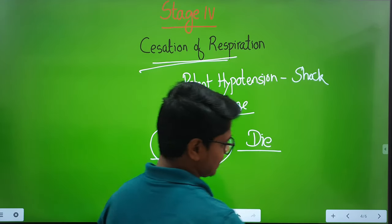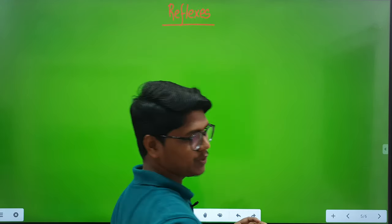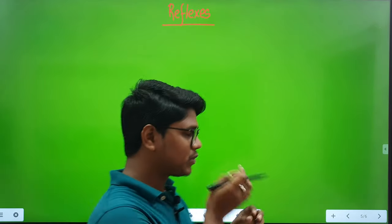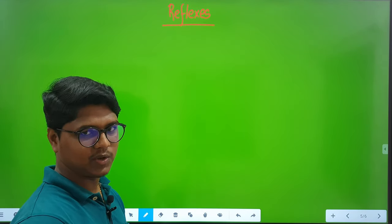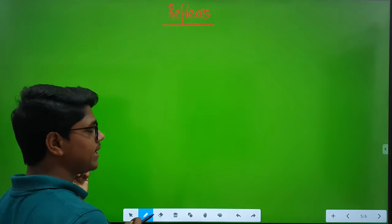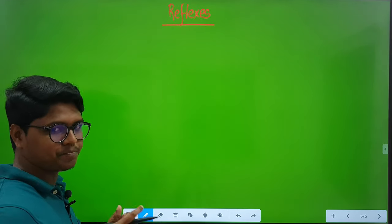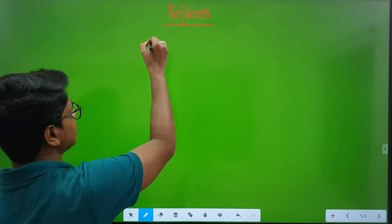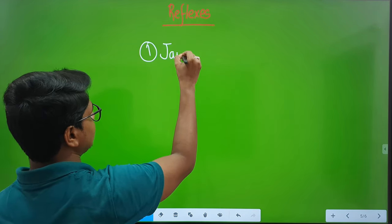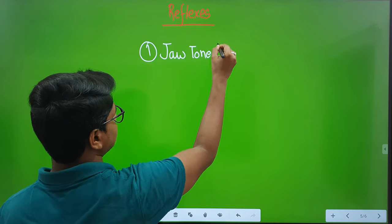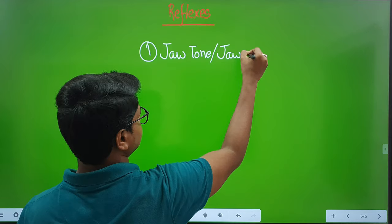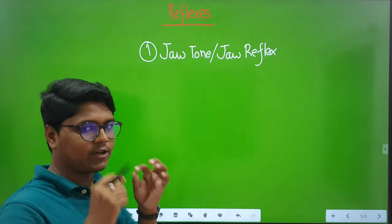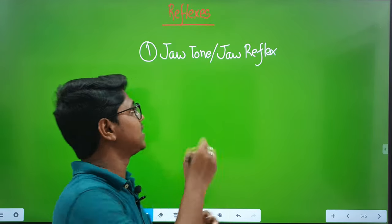This is all about the stages. I hope you understood all the stages — how they develop and how they progress — so you should be able to write something in your paper. Now, the reflexes: how to remember all the reflexes? First you will find the jaw — also known as jaw tone or jaw reflex.